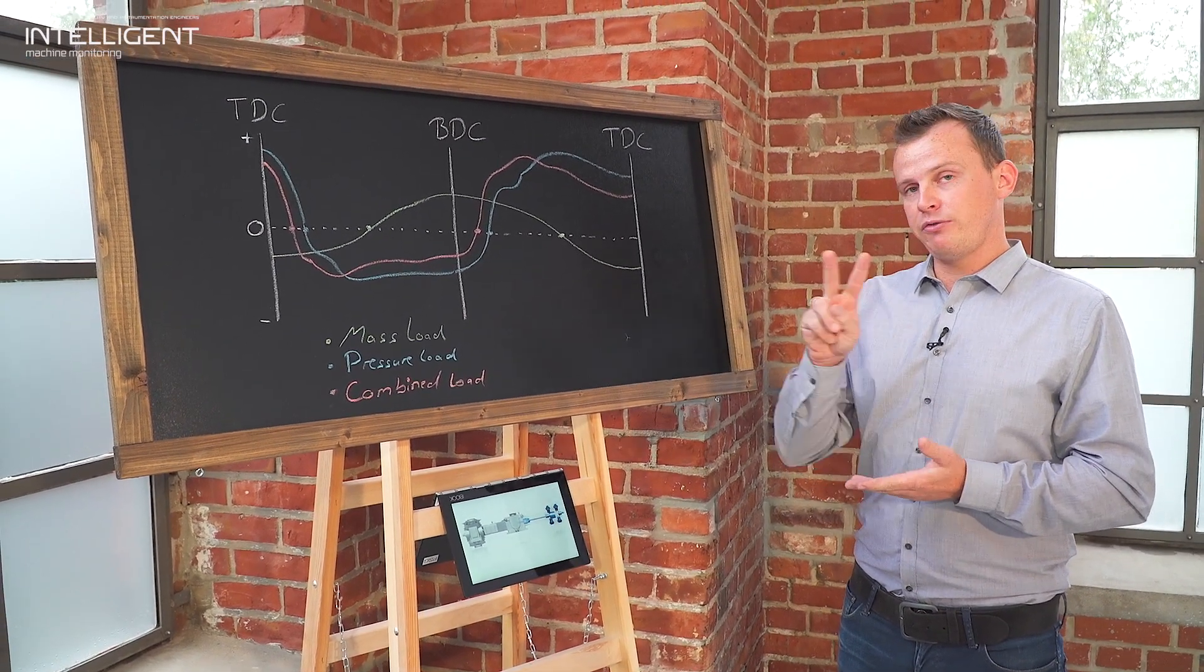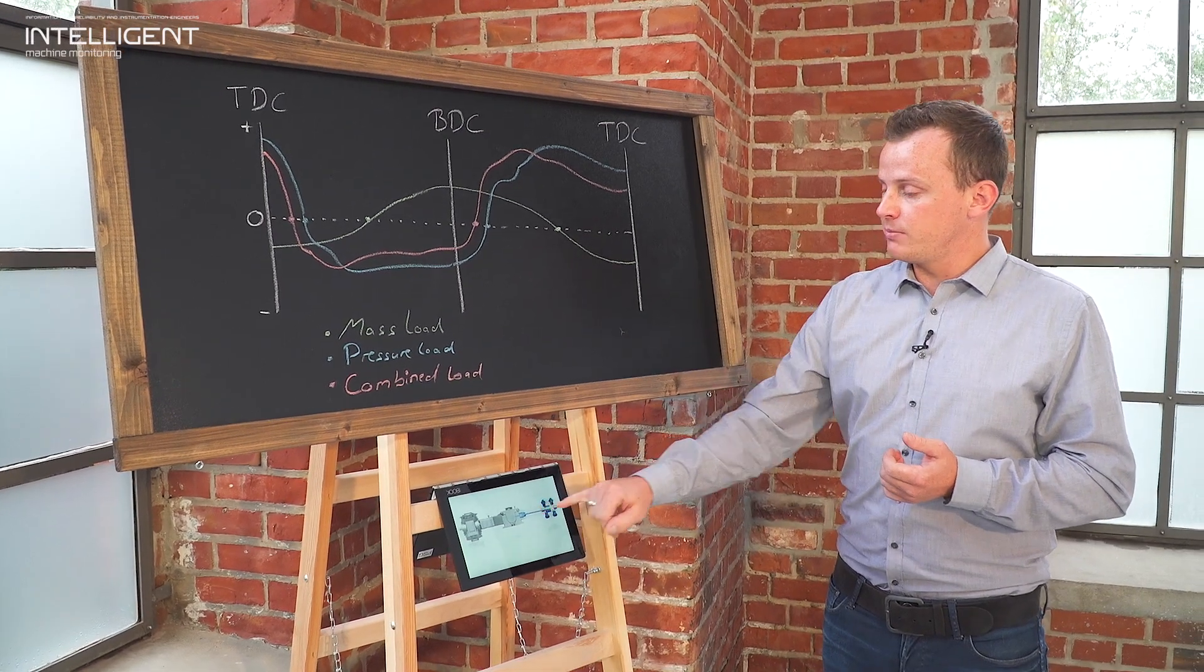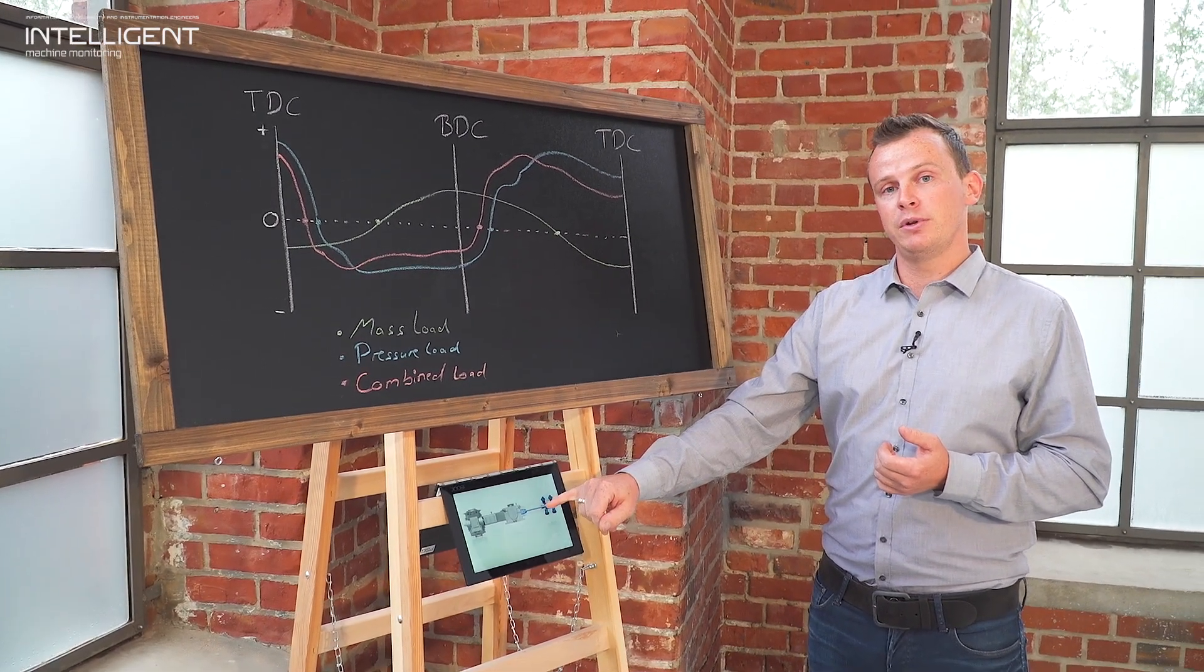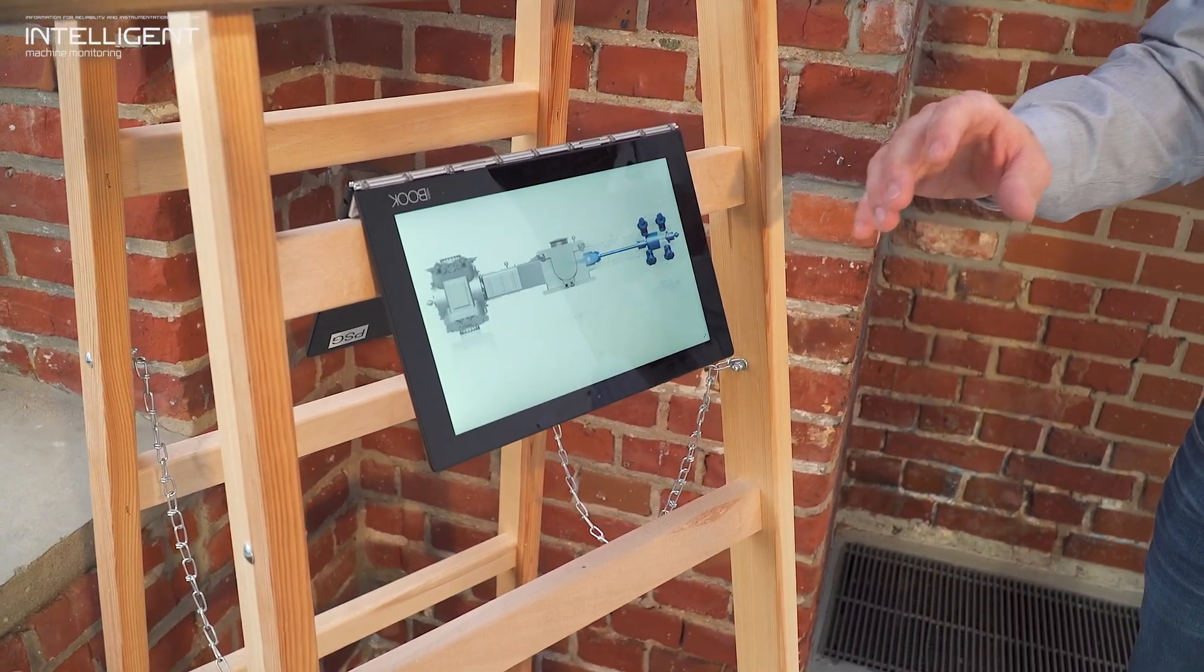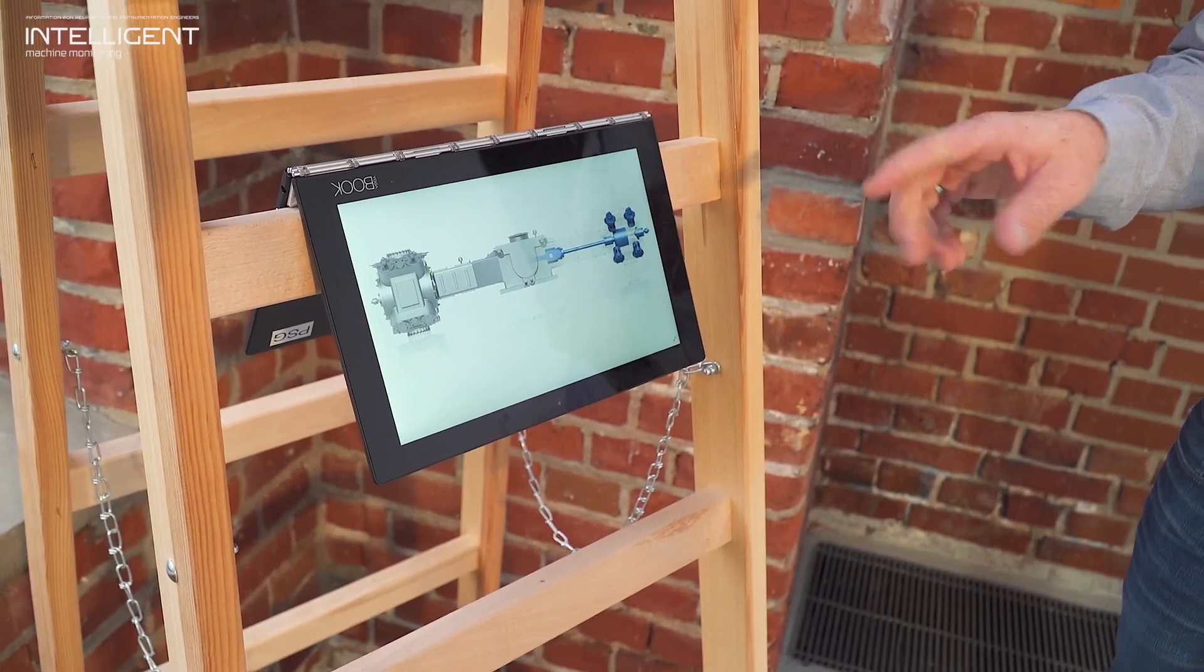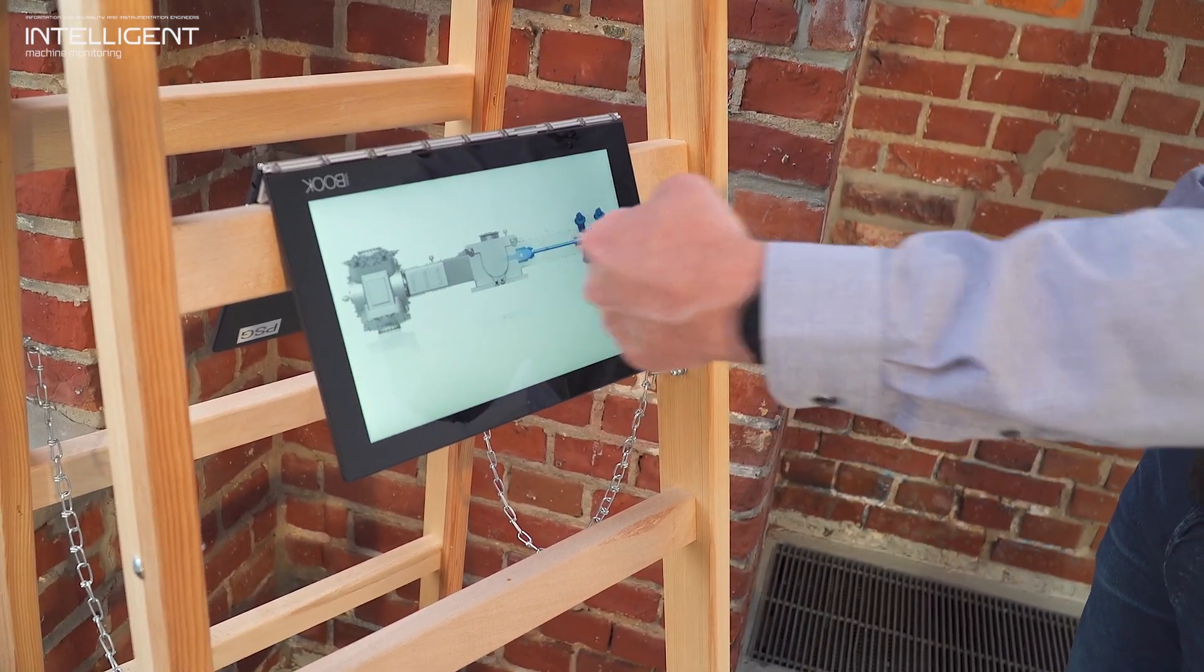In theory we have two different forces which are working on the piston rod. The first one is from all the masses we have here on the piston: the piston, the piston rod, the cross head, and all these parts need to be moved back and forward from the top dead center in this direction and from the bottom dead center finally in this direction.